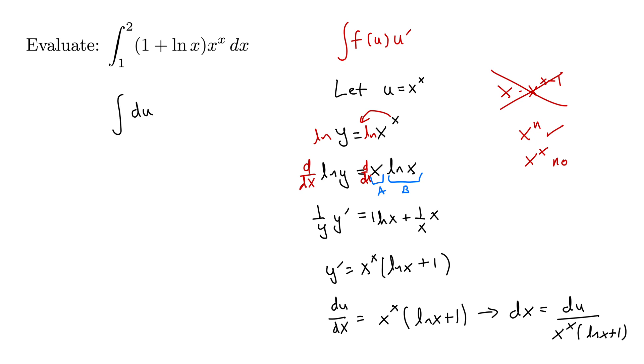We have to change the endpoint. So let's do that before we lose track of the limits of integration there. Clear out a little bit of room here. So u of 1 is, well, u is here. u of 1 is 1 to the 1, which is 1. Similarly, u of 2 is 2 to the 2, which is 4. So we now have the integral from 1 to 4 of du.